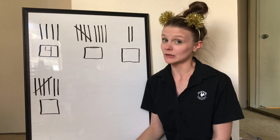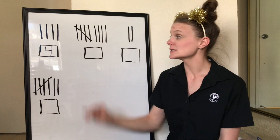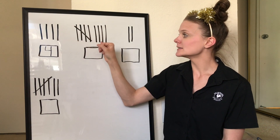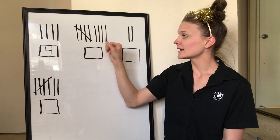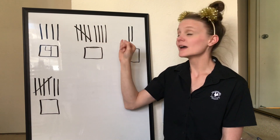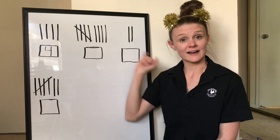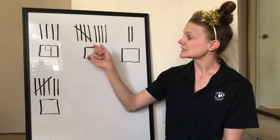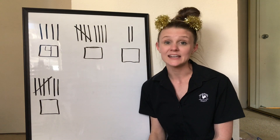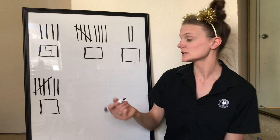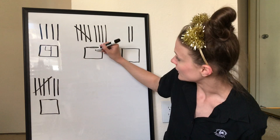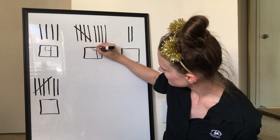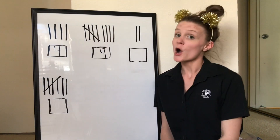Start counting with me. Ready, friends? Five, six, seven, eight, nine. So when you count all these tallies together, there are nine tally marks. So I'm gonna write my number nine.